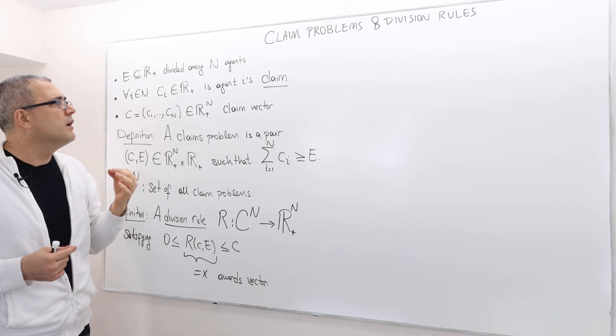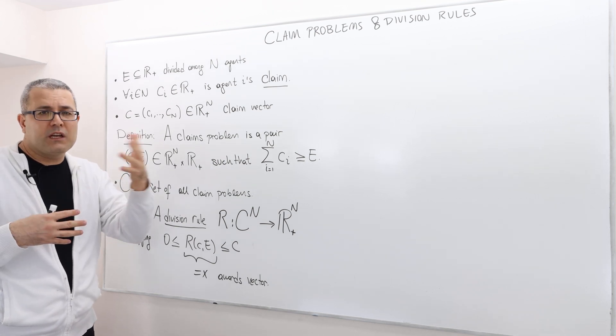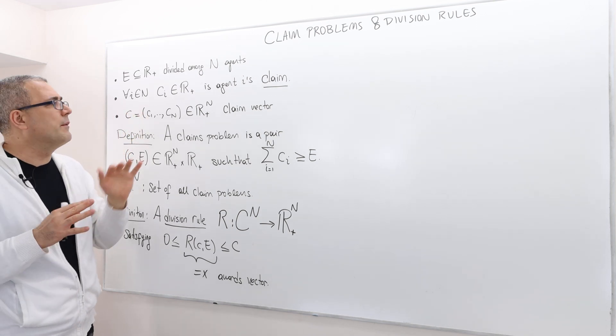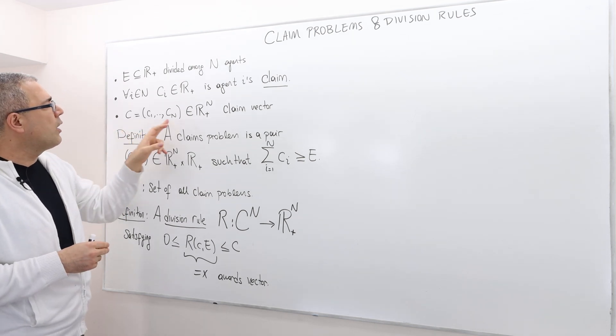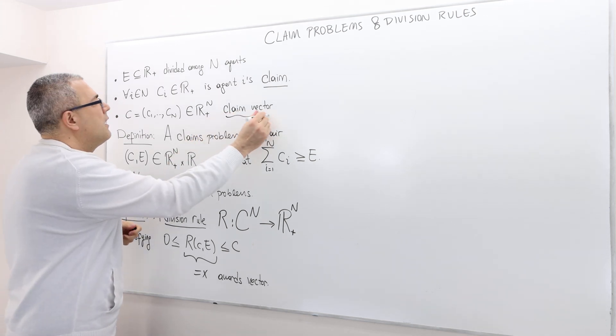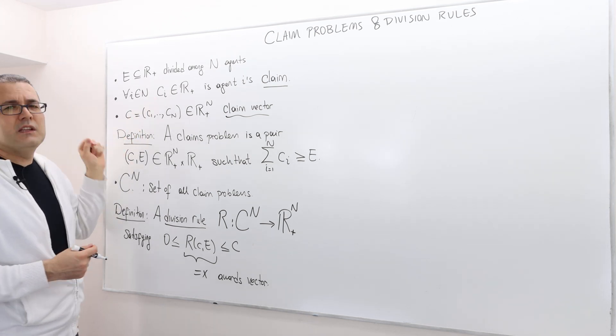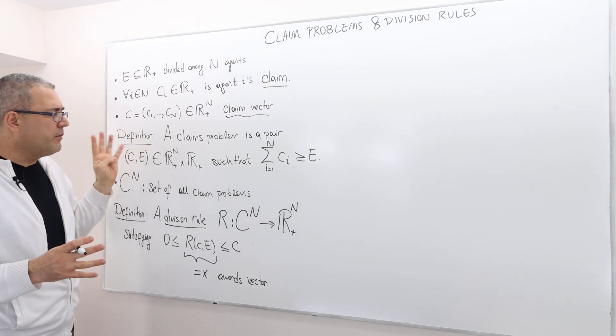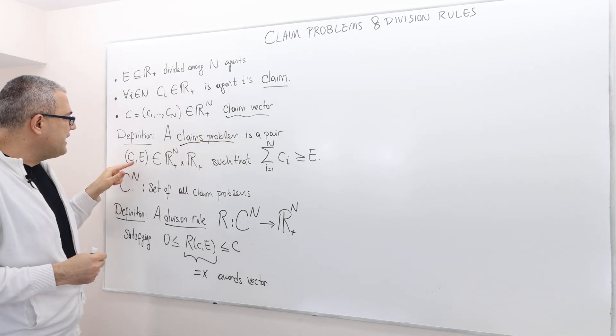So each agent has a claim. Obviously, this claim should be non-negative. And for some agents, it could be positive. For some agents, it could be zero. That's perfectly fine. But we're not allowed to use a negative claim. Well then, when we bring all those agents' claims together, we form claim vector. So we denote it by C. So whenever I drop the subscript I, we basically mean a vector.